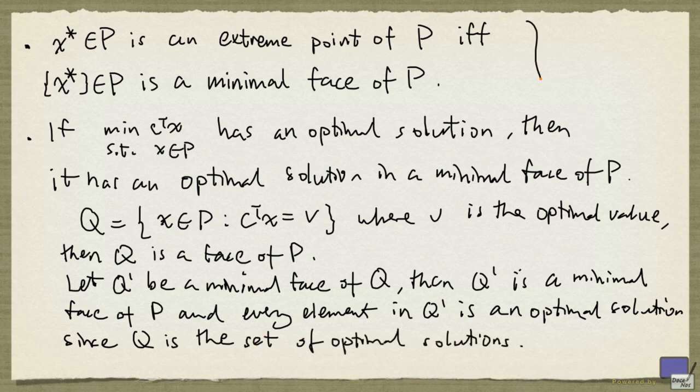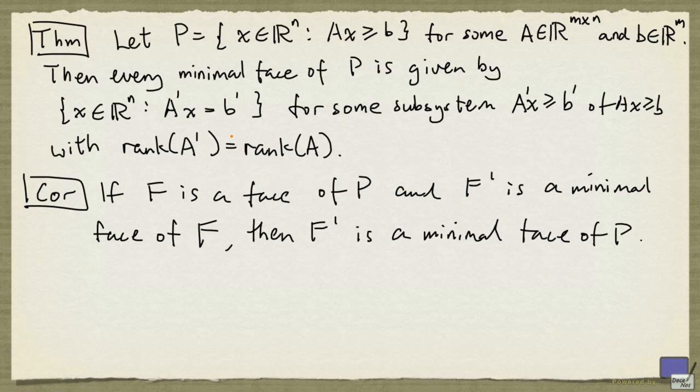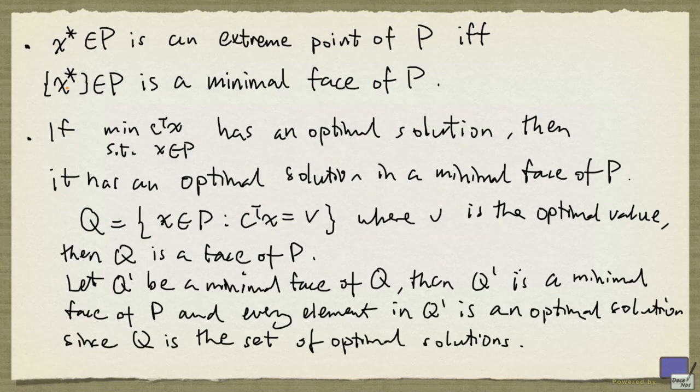So if we combine this with what we have up here, we see that if P is pointed, and if this has an optimal solution, then there's going to be an optimal solution that is an extreme point of P. And since minimal faces are affine subspaces, and an affine subspace is bounded only if it is a single point, we see that the minimal faces of a polytope must have dimension 0. And so they must be singletons. And these singletons, according to this fact here, must be extreme points of P. And so we can abuse our language, and say that the extreme points of a polytope P are the minimal faces of P.